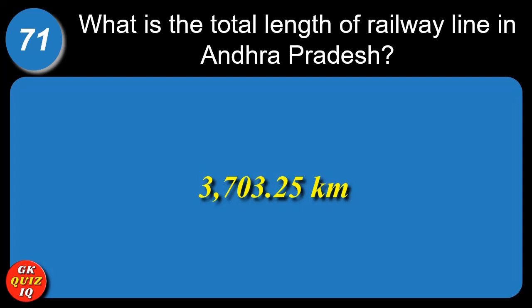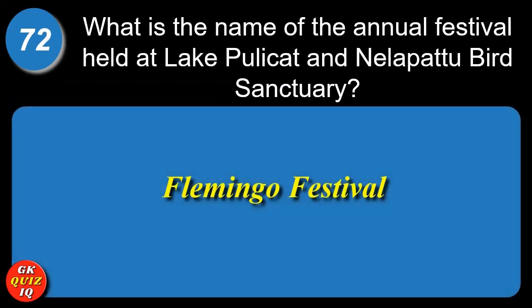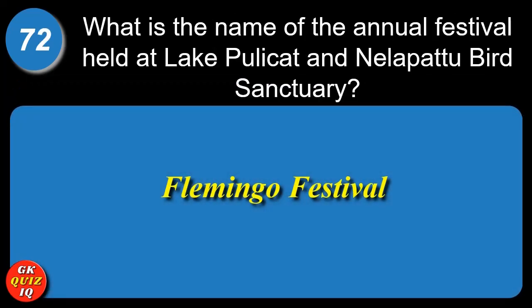What is the total length of railway line in Andhra Pradesh? 3703.25 km. What is the name of the annual festival held at Lake Pulicat and Nelapattu Bird Sanctuary? Flamingo Festival.